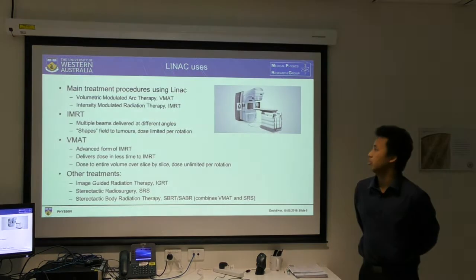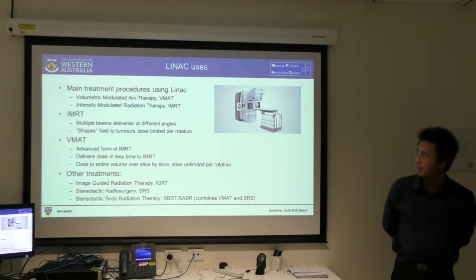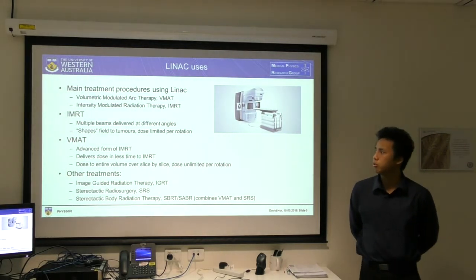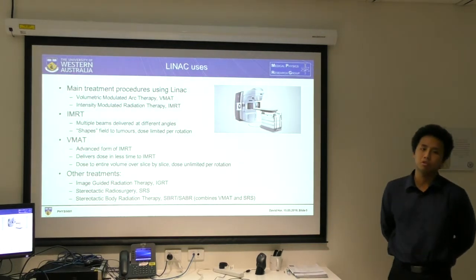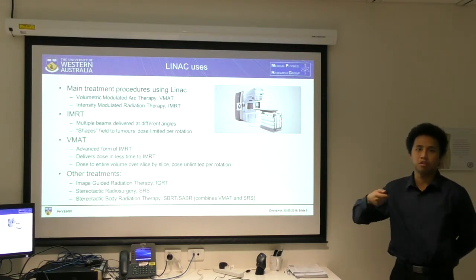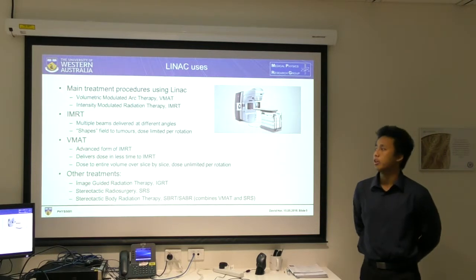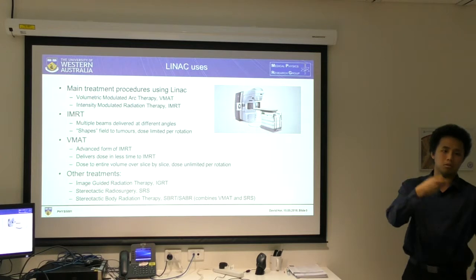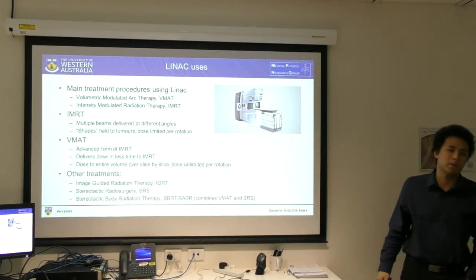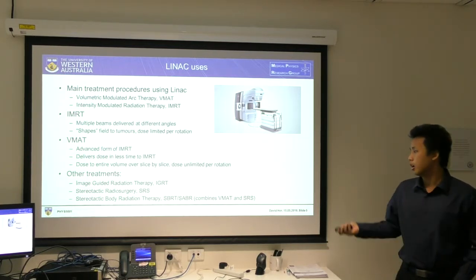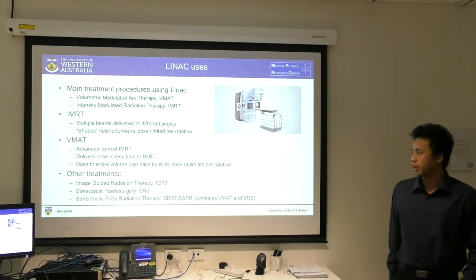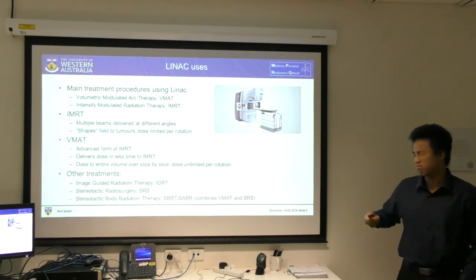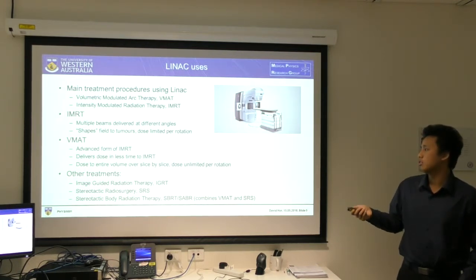Looking at the main uses of the LINAC: intensity modulated radiation therapy and volumetric modulated arc therapy have been talked about a lot recently. IMRT uses multiple beams at different angles but has a limited dose per rotation, so it takes about eight rotations to deliver the entire dose. Whereas volumetric modulated arc therapy delivers dose in less time because it's a 3D dose distribution — instead of going slice by slice, it can be done in about two rotations, which drastically reduces patient time under the couch.